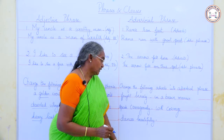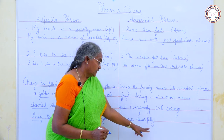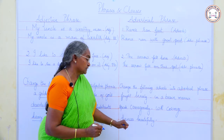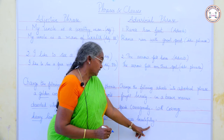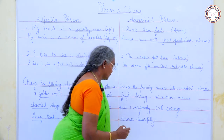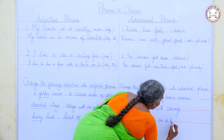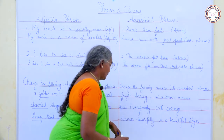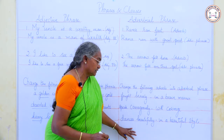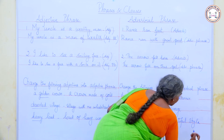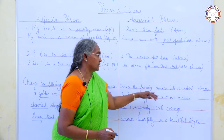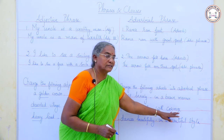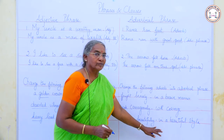'Dances beautifully.' 'Beautifully' is the adverb — it qualifies the verb 'dances.' A single word describing the verb. Now change this adverb into an adverbial phrase: 'In a beautiful style.' So, 'dances in a beautiful style.' All these adverbs are changed into adverbial phrases: 'Bravely' → 'in a brave manner,' 'Courageously' → 'with courage,' 'Beautifully' → 'in a beautiful style.'